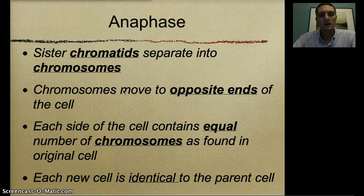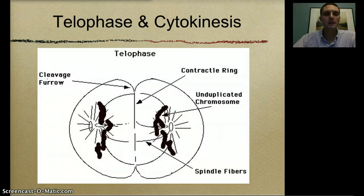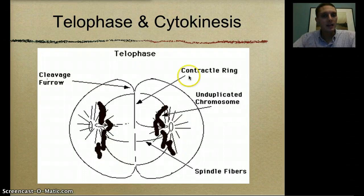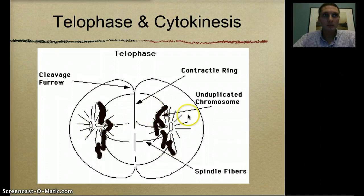In telophase, the last phase, each new cell is going to be identical to the parent cell. Telophase and cytokinesis is where we actually see our original one cell split into two. In animal cells, we see something called a cleavage furrow form, and that's what separates or splits these cells into two. Our chromosomes begin to unwind, the nuclear envelope begins to reform, and we see two different cells forming.